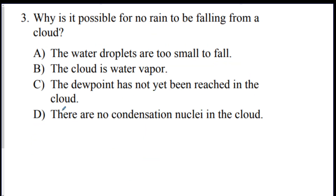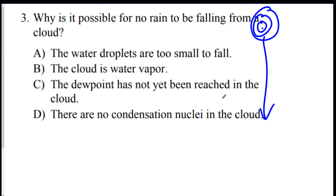Number three: why is it possible for no rain to be falling from a cloud? Water droplets need to be a certain size and weight in order to be heavy enough to fall, so the best answer is A.